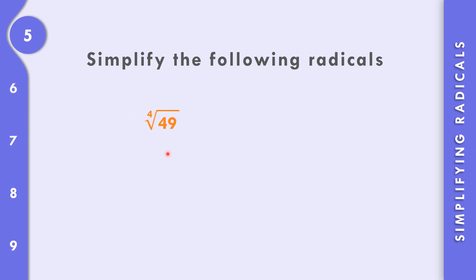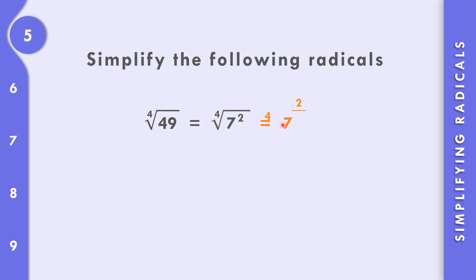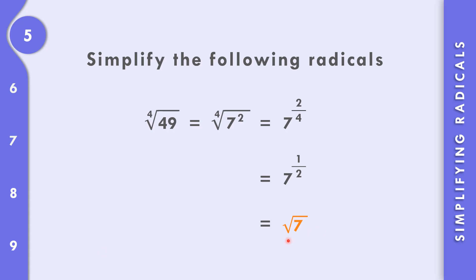For number 5, we have the 4th root of 49. First, we simplify 49: 7 times 7 equals 49, so that is 7 squared. We have the 4th root of 7 squared. Writing 2 over 4 and reducing: 2 divided by 2 is 1, and 4 divided by 2 is 2, giving 1 over 2. Converting back to radical form, the final answer is the square root of 7.